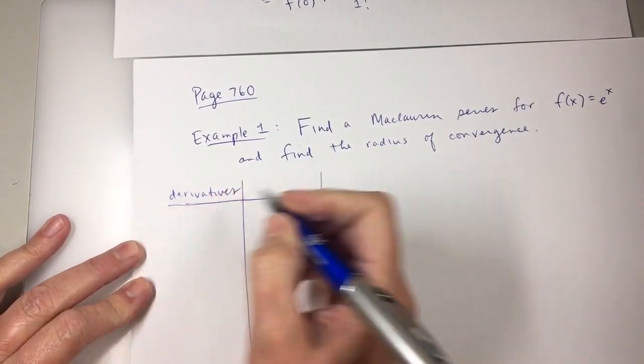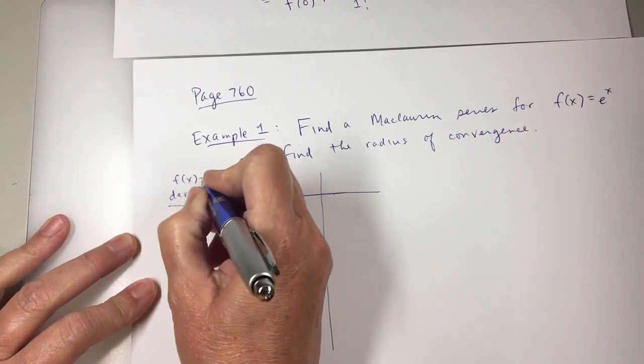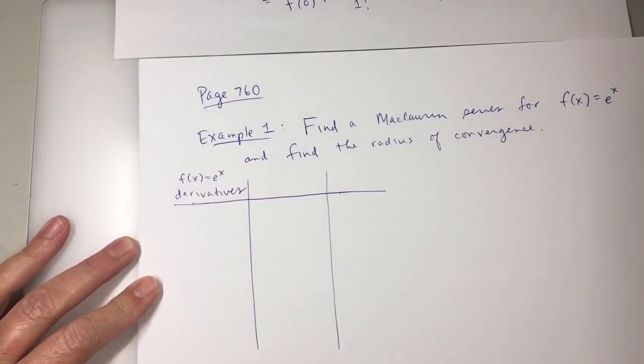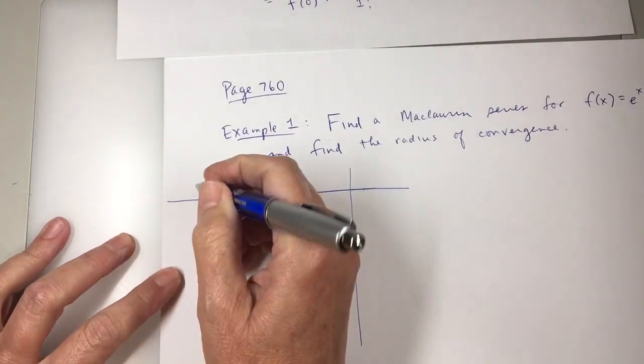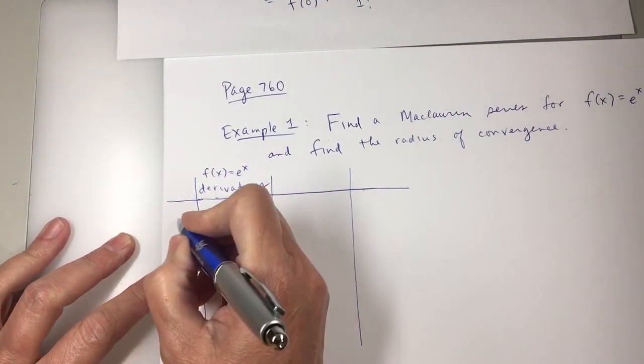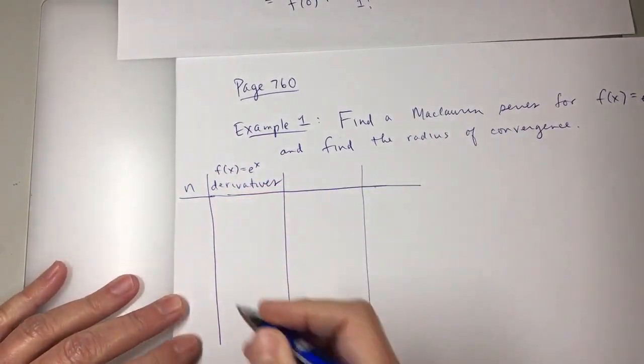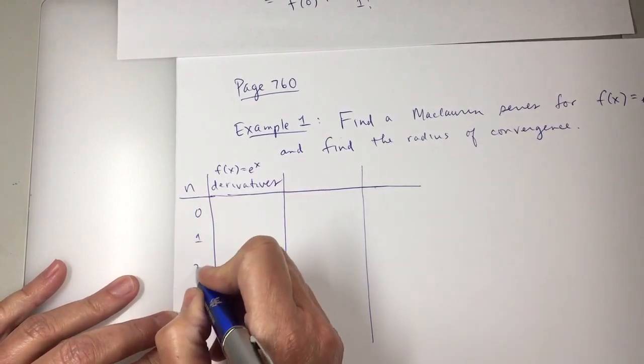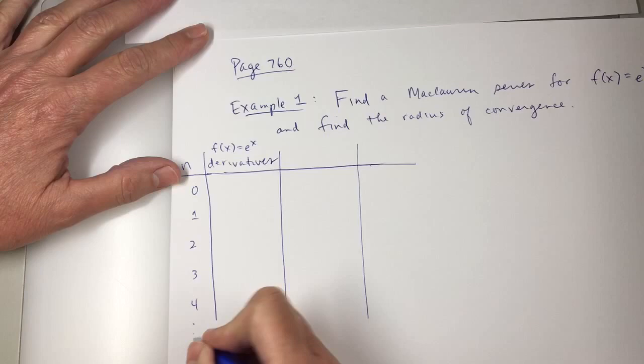The function is f(x) equals e to the x. So maybe I need a column here that's for n. That's what I need. Values of n. So I'm going to say when n is 0, n is 1, 2, 3, 4, and so on.